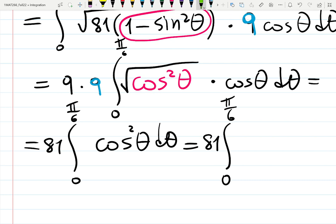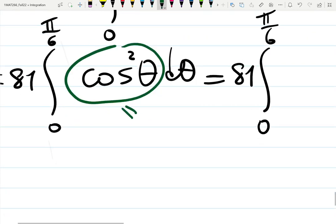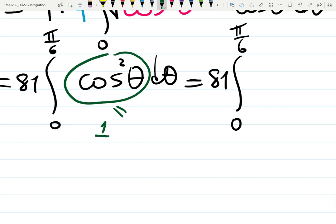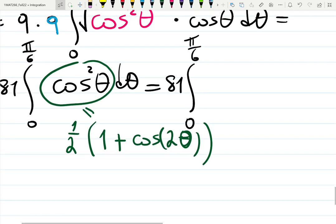You have to use double angle formula. To get rid of the squared, we use double angle formula. Cosine squared gives you 1/2(1 + cos(2θ)). Don't forget to double your theta - that's the whole point.